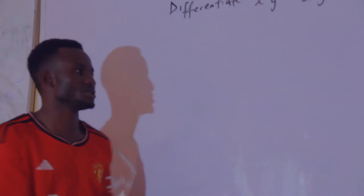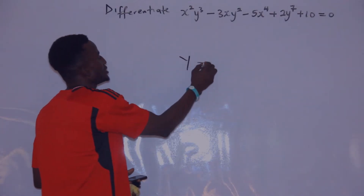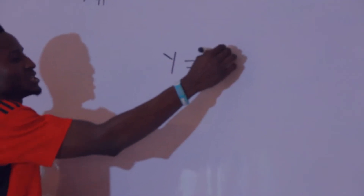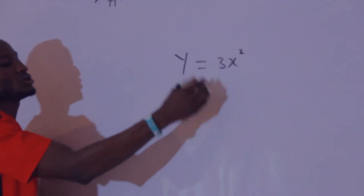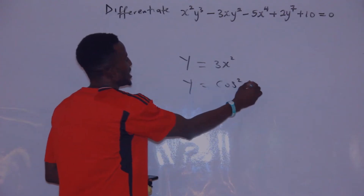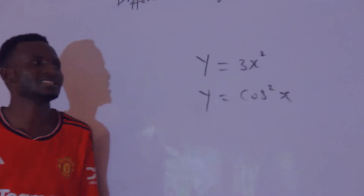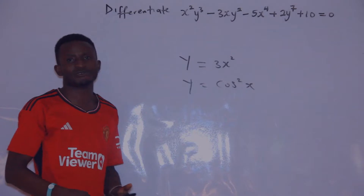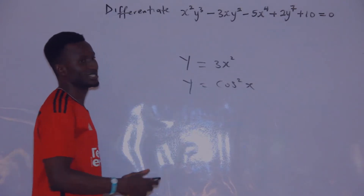If we are looking at explicit differentiation, you are going to be given y equals maybe 3x something, or y equals cos squared x. You will observe that they make y the subject of the formula in the explicit.